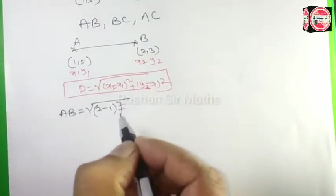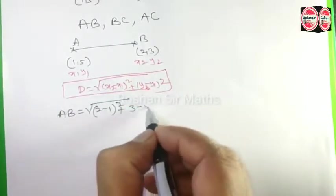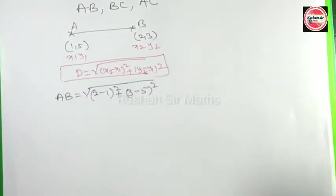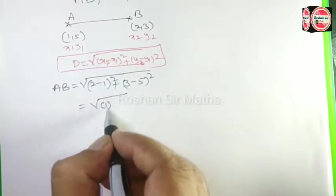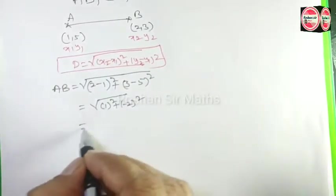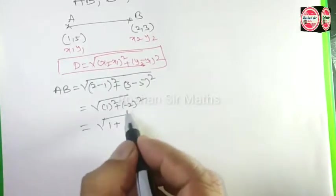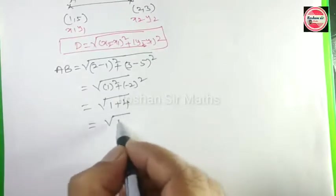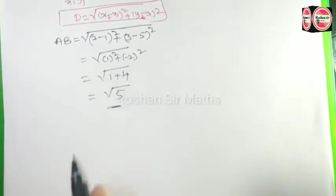Continuing: AB = √[(2-1)² + (3-5)²] = √[1² + (-2)²] = √[1 + 4] = √5. So AB = √5. Now we move to the next step: BC.